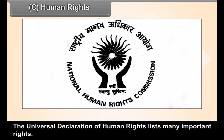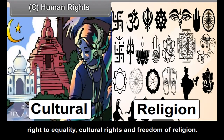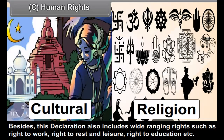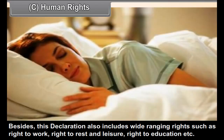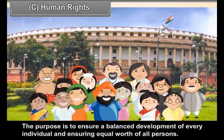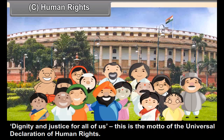The Universal Declaration of Human Rights lists many important rights. These include individual freedoms such as freedom of speech and movement, right to equality, cultural rights, and freedom of religion. Besides this, the declaration also includes wide-ranging rights such as right to work, right to rest and leisure, and right to education. The purpose is to ensure a balanced development of every individual and equal worth of all persons. 'Dignity and justice for all of us' — this is the motto of the Universal Declaration of Human Rights.